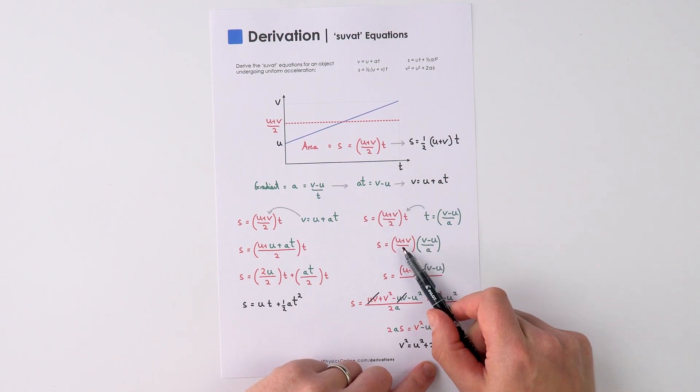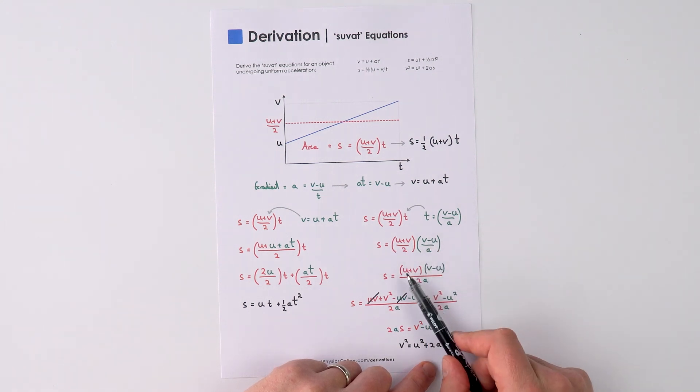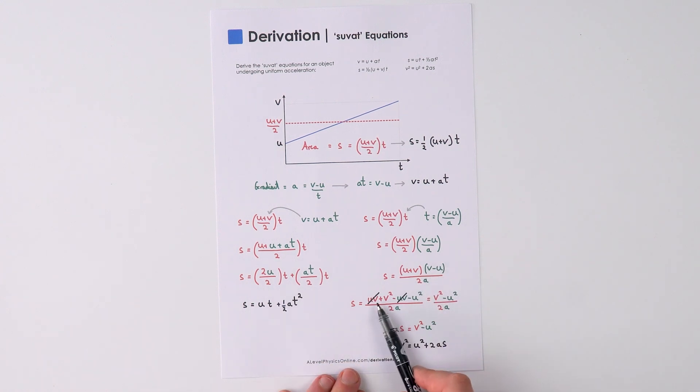When you do that we've got this and then we can multiply through. So we've got u plus v multiplied by v minus u all over two a. So that's going to be equal to uv plus v squared minus uv minus u squared and we can see that the uv's cancel. That means s is equal to v squared minus u squared over two a.